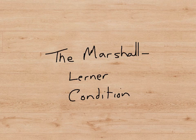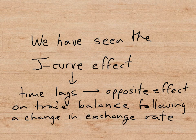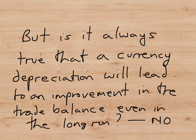This presentation is on the Marshall-Lerner condition and follows directly from the presentation on the J-curve effect. When we were looking at the J-curve effect, we saw that time lags can sometimes lead to a variable behaving in the opposite direction to what we would expect. So we saw that in the short run, after a currency depreciates, instead of the trade balance getting better, it can actually get worse before it gets better. This was due to time. But even in the long run, is it always true that a currency depreciation will lead to an improvement in the trade balance?